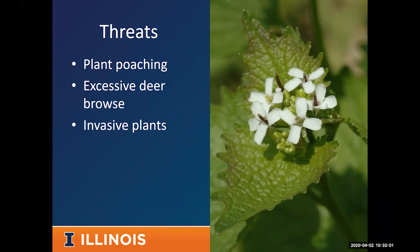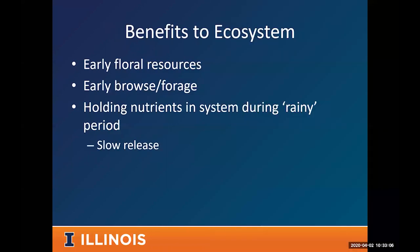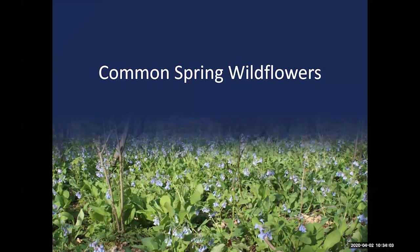Beyond threats, spring wildflowers also provide important ecosystem benefits. They provide early floral resources and early browse and forage at a time when not much else is blooming. Interestingly, research shows they help hold nutrients in these systems during rainy periods — by already having roots in the ground taking up nutrients in spring, they keep those nutrients from being washed out of rich wood sites, enriching the soils for other plants throughout the year.